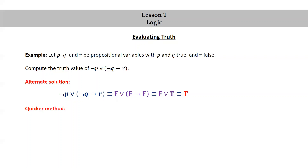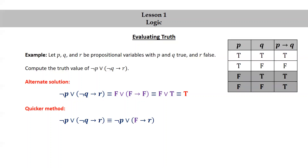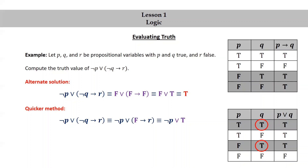Let's look at a quicker method. We observe that we actually don't need to substitute all those truth values. The truth value of this compound statement is determined by the fact that q is true. So not q is false. Using the truth table for implication, false implies true is true and false implies false is true, so it doesn't matter what r is — the result will always be T. So we get not p or T. Similarly, looking at the truth table for disjunction, anything or T is going to be T. So we get the result without having to substitute in all of the truth values.